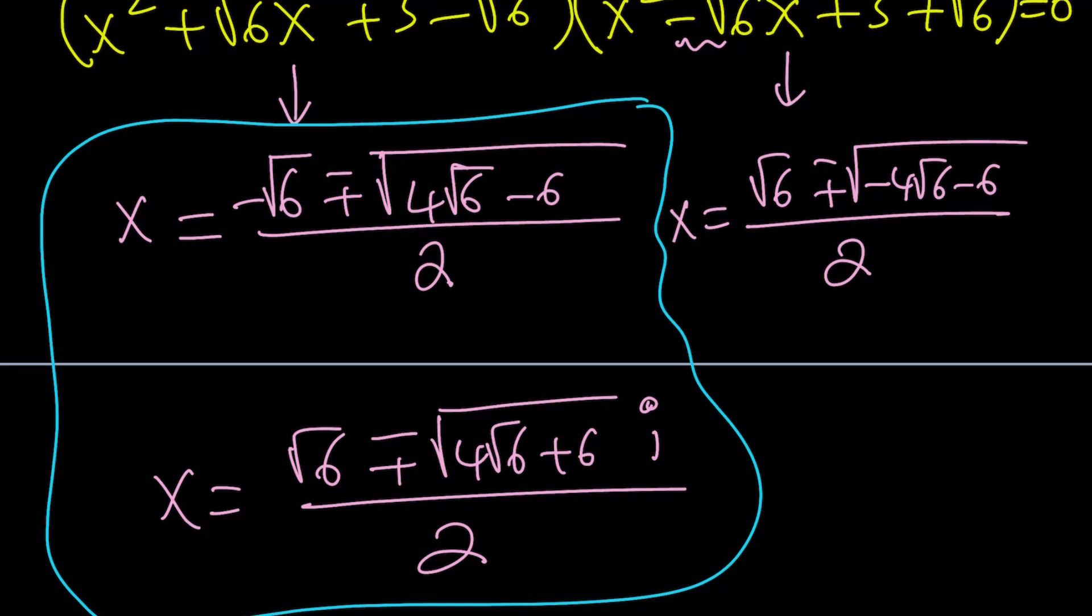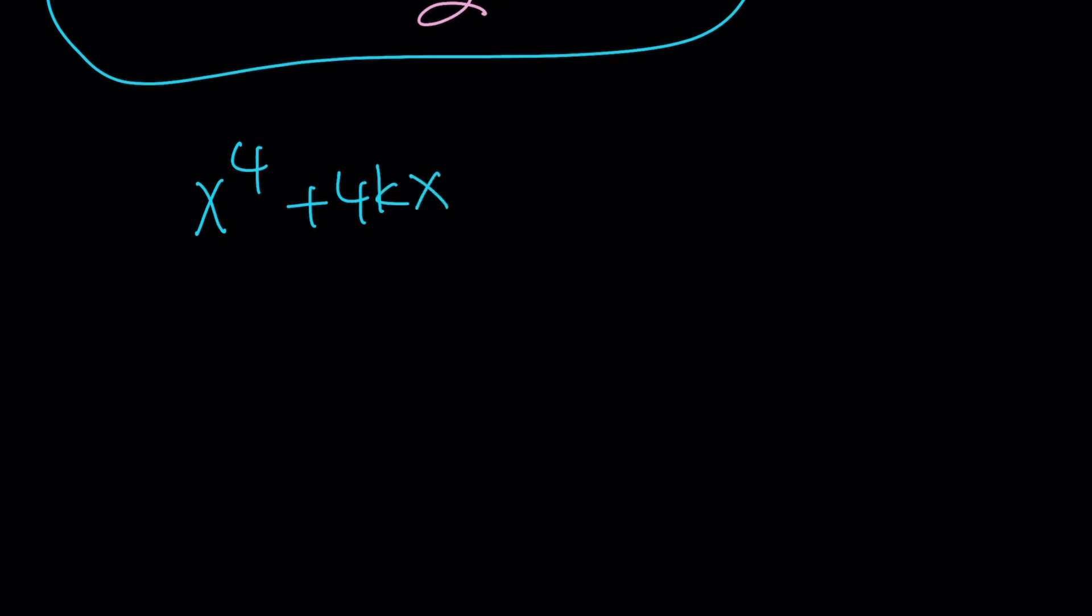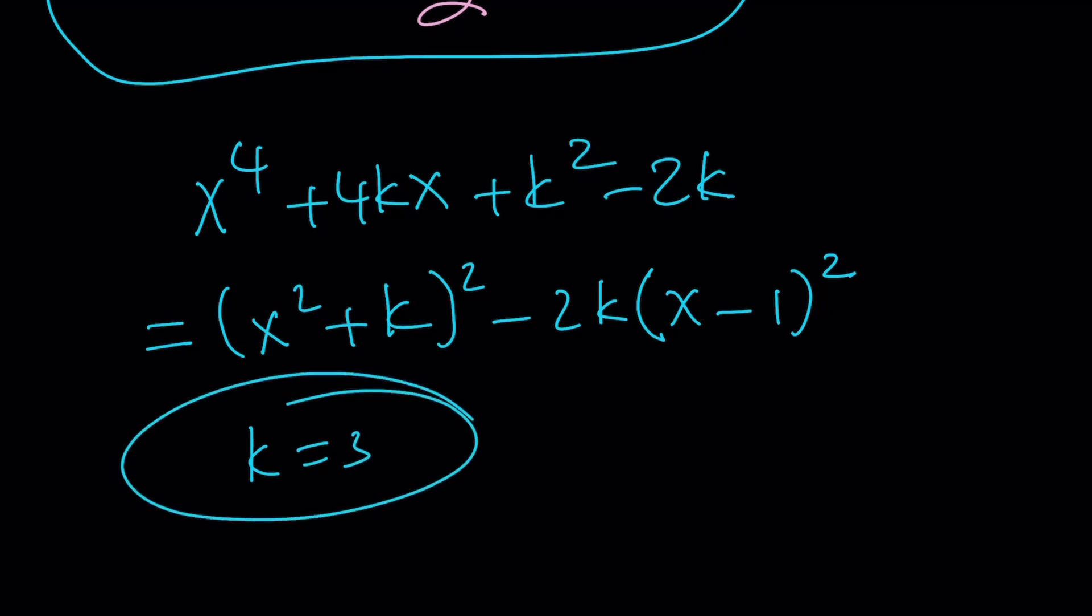This is a quartic. Let's talk about quickly the general form. I told you that I was going to give you the general form of these equations. Here's my general form: x to the fourth plus 4kx plus k squared minus 2k. And this can be factored as x squared plus k squared minus 2k times x minus 1 squared. Obviously, in our situation, k is equal to 3 and then the rest follows.